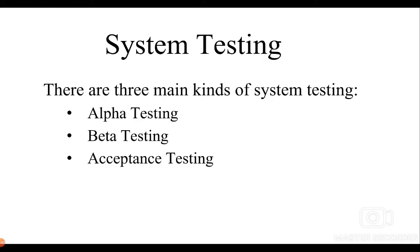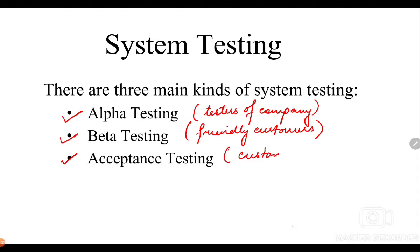The next we have is system testing. There are three different kinds of system testing: alpha testing, beta testing, and acceptance testing. Alpha testing is basically done within the organization itself by the testers of the company. Beta testing is by the friendly customers. And acceptance testing is finally with the final customers for satisfaction.